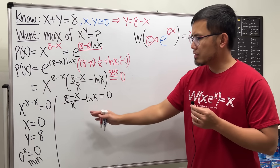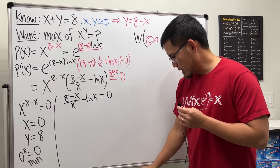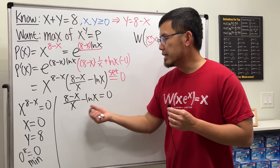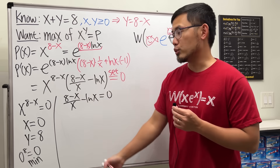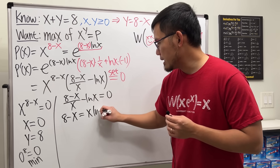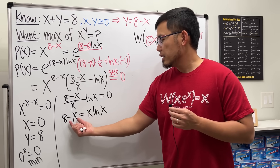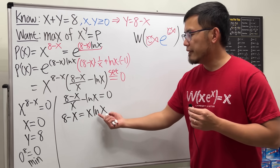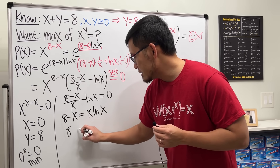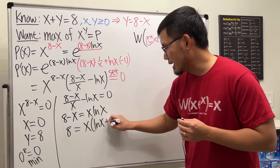To do so, we first put all the x on one side. Moving things over and multiplying both sides by x, we get 8 minus x equals x times ln x. Then moving the minus x to the other side and factoring, we get 8 equals x times (ln x plus 1).